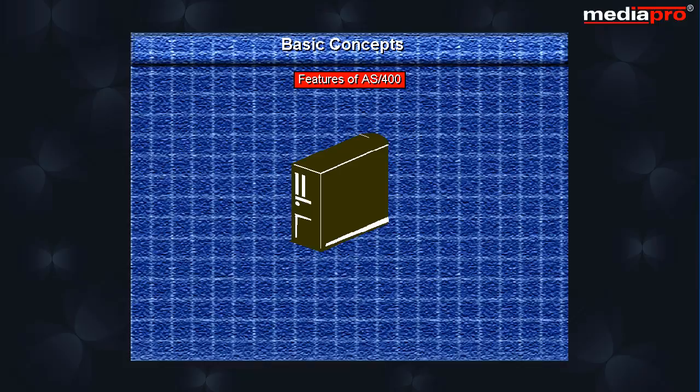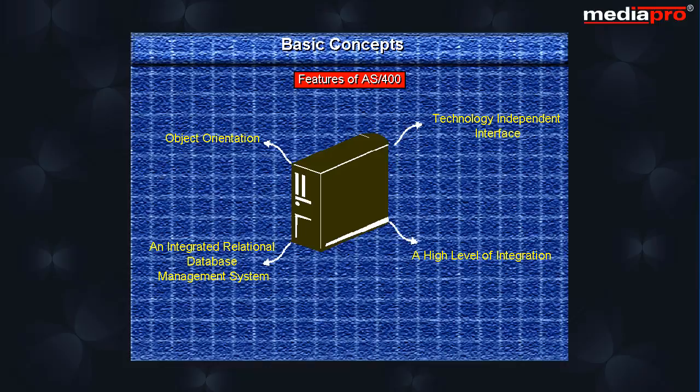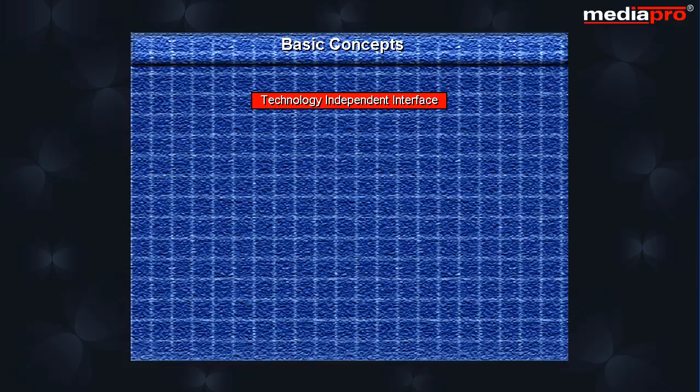In this chapter, we will look at some of the basic concepts of the AS400. Let us begin by looking at some of the features of the AS400 that have contributed to making it one of the most popular platforms for business computing. They are: technology-independent interface, a high level of integration, object orientation, an integrated relational database management system, and single-level storage. Let us look at each of these features in detail.